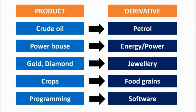Petrol is derived from crude oil. The power or energy we use is derived from the power plant. Jewelry is derived from gold or diamonds. The food grains we consume are derived from crops. Software is derived from programs. So in this world, we basically enjoy derivatives more than the raw product.